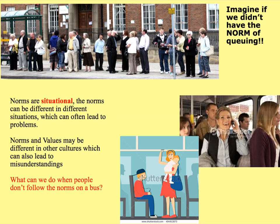Norms can also be different in other cultures, and this can lead to significant misunderstandings — particularly if you go on holiday or if people come from other countries to live in the UK. They can misunderstand what's considered normal and the values shared by the dominant culture, which can lead to conflict. When people don't follow norms on a bus — for example, a teenager sitting down and ignoring a young mum carrying a baby when the norm would be to give up their seat — what can we as individuals do to change that person's behaviour or make them feel uncomfortable about breaking the social norm? They're not breaking the law, but they are definitely breaking the norm.